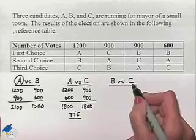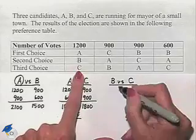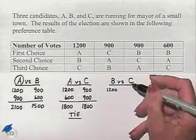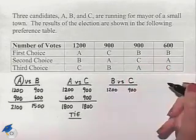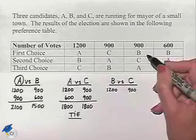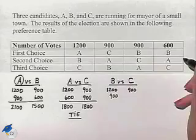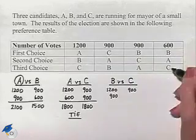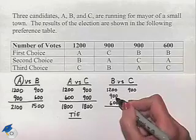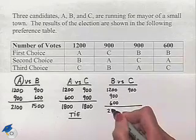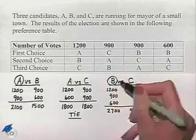Now let's look at B versus C. We're going to have in our first column B ranked above C so that's 1,200 votes for B. In our next column C is ranked above B. That'll be 900 votes for C. In our third column of votes B is ranked above C so we'll have 900 votes for B. And in our last column B is ranked above C so we'll have 600 votes for B. Combining we'll have 2,700 for B and 900 for C. So we see that B will be the winner in that pairing.